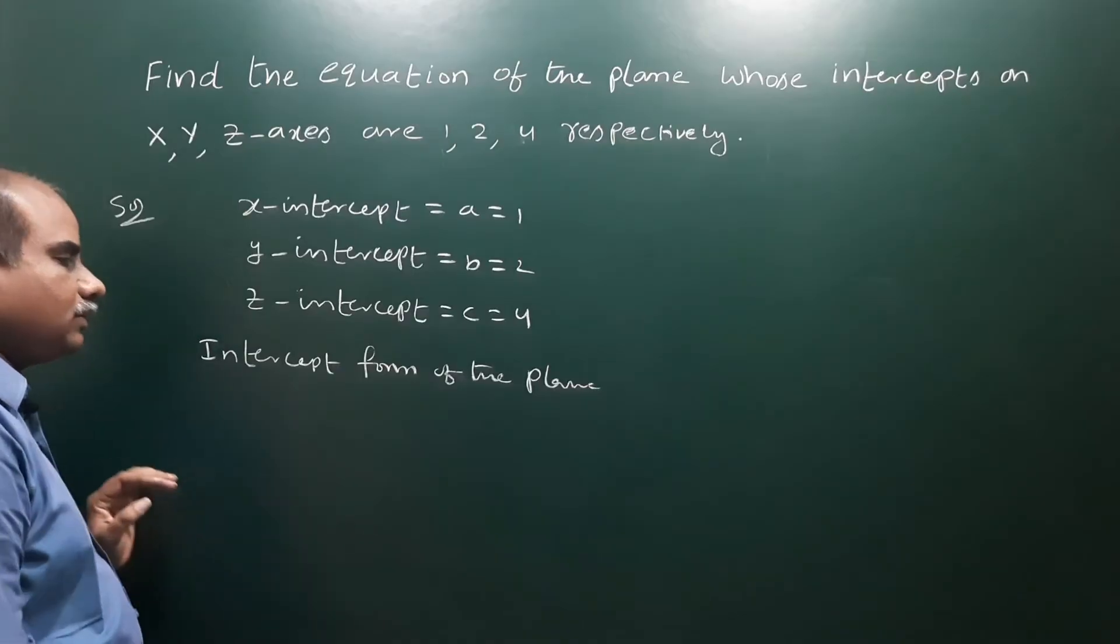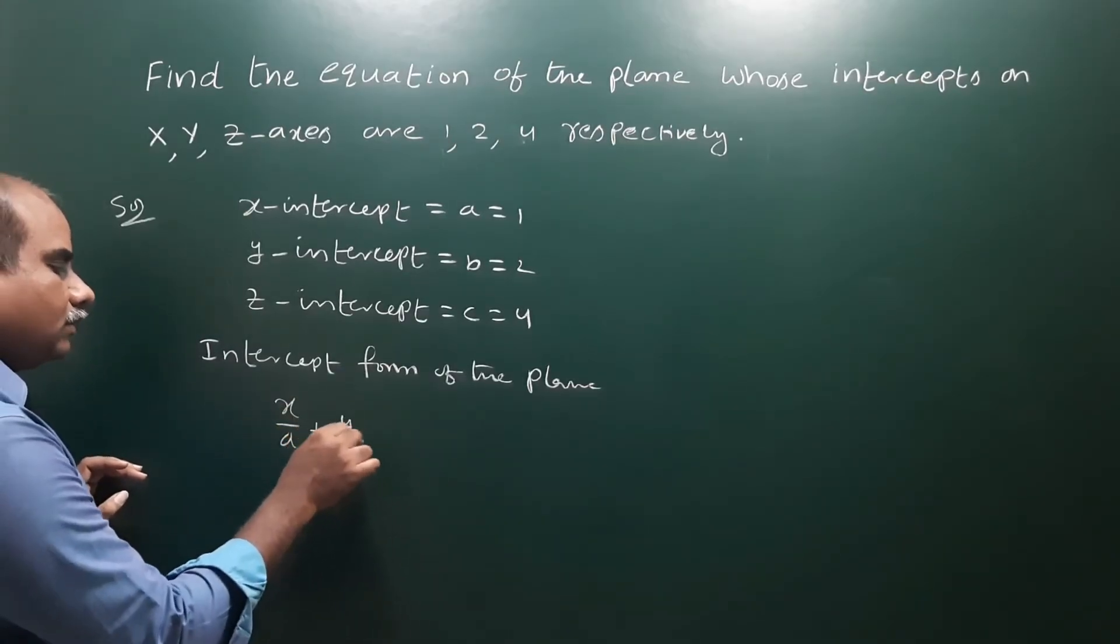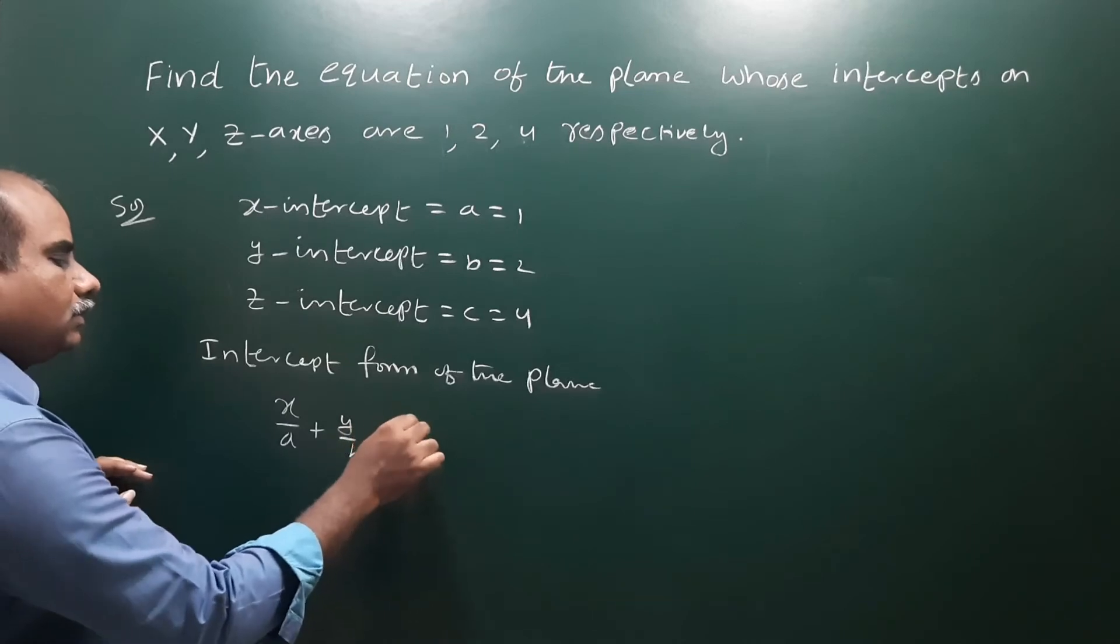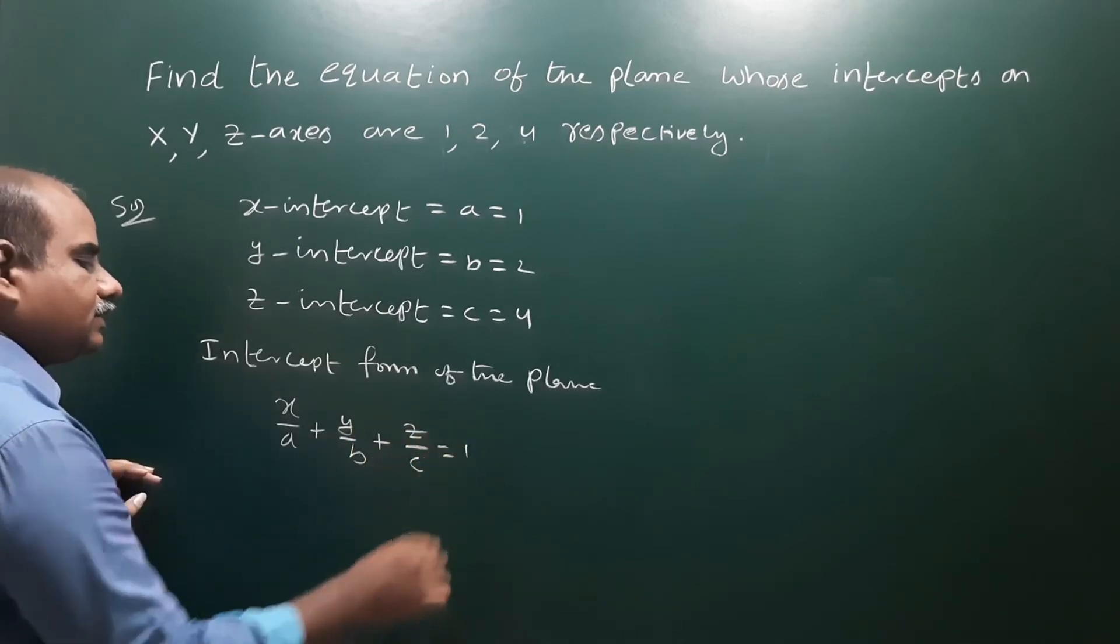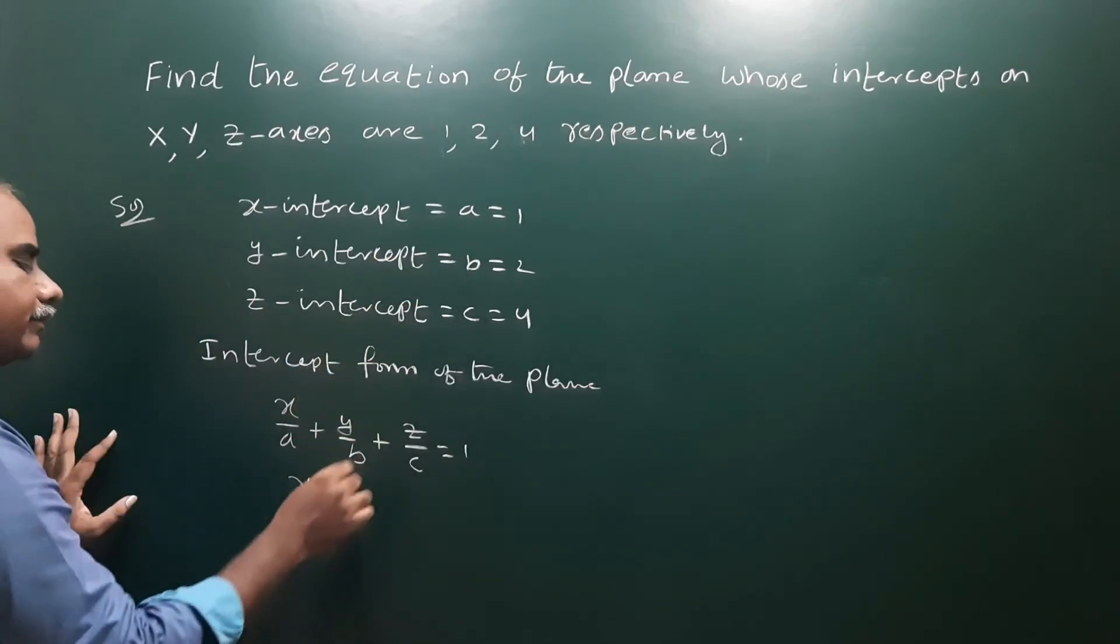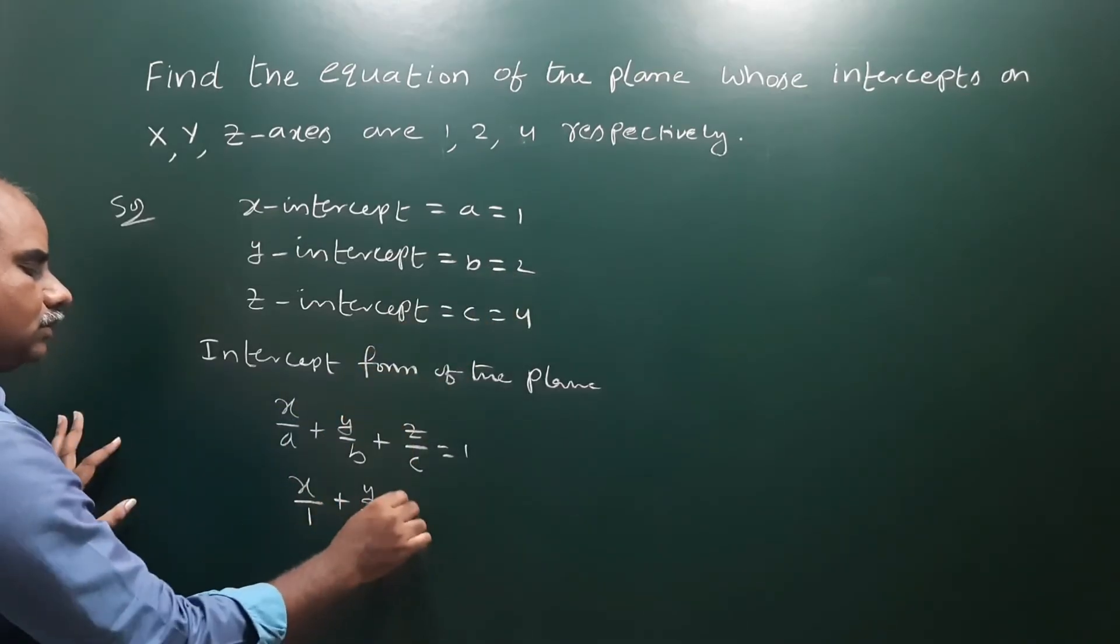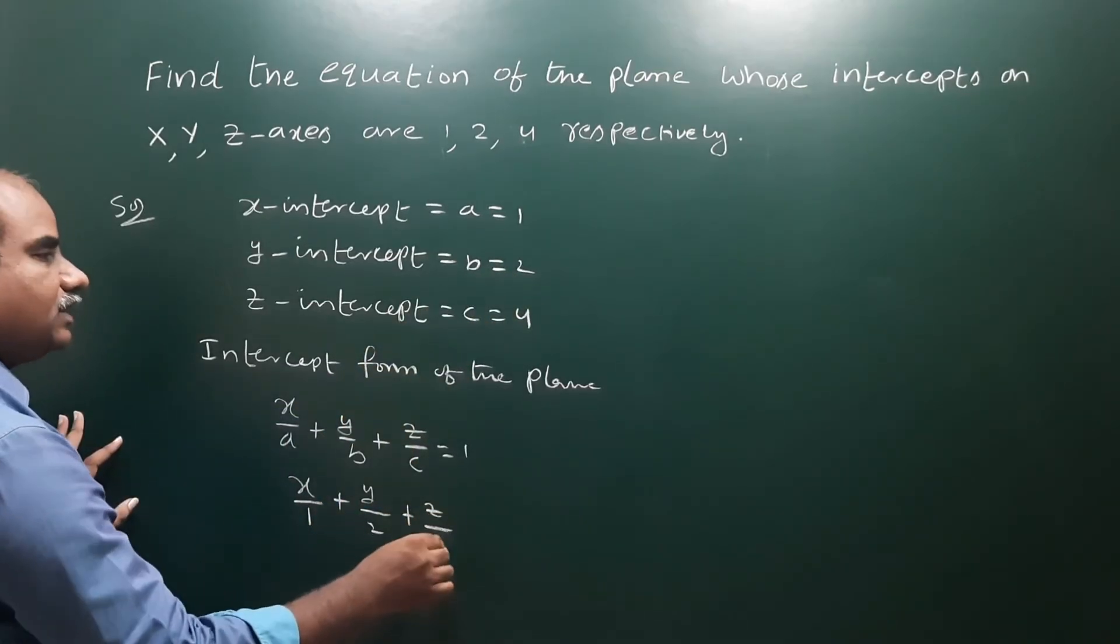The intercept form of the plane is x/a plus y/b plus z/c is equal to 1. Now substitute the values: x/a means x/1 plus y/b means y/2 plus z/c means z/4, that is equal to 1.